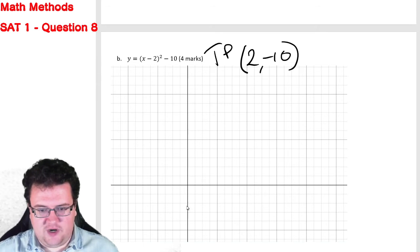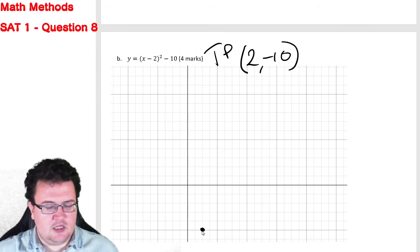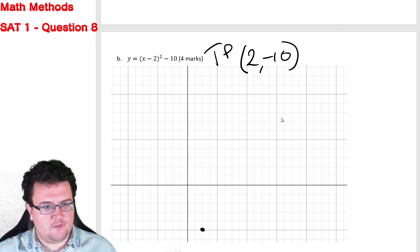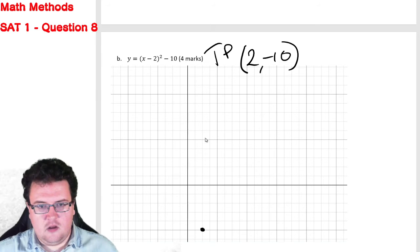So what we're going to do is we're going to quickly mark out some values here. So that's going to be minus 2, minus 4, minus 6, minus 8, minus 10. And we'll call this 1, 2. That means here is my turning point. And that means that my intercepts are going to be at 2 plus minus root 10.